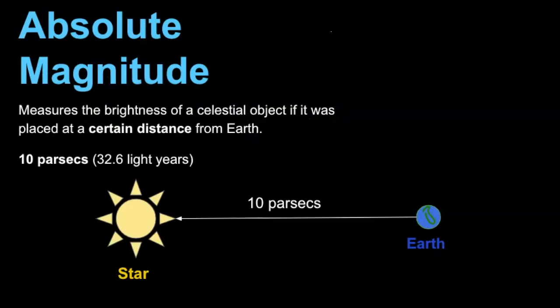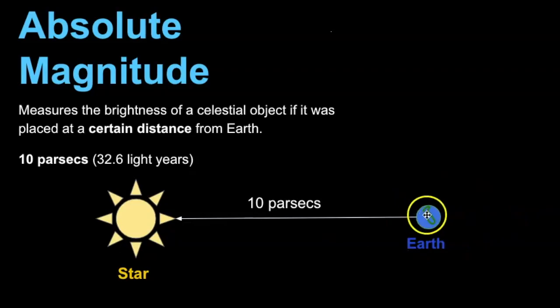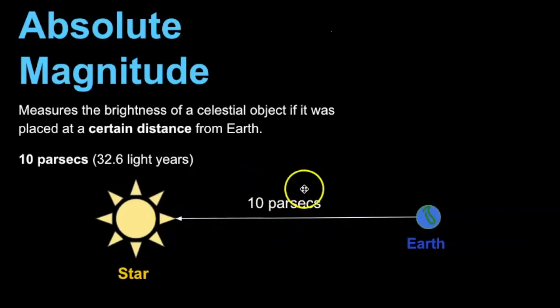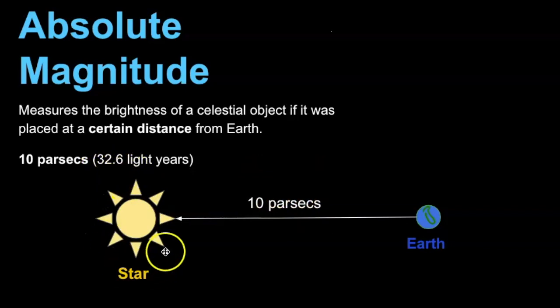Absolute magnitude is when scientists measure the brightness of a celestial object if it were at a particular distance from Earth — that distance being 10 parsecs, or 32.6 light years. So if a star was placed at 10 parsecs away, how bright would it be?